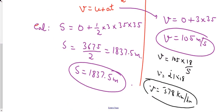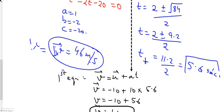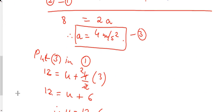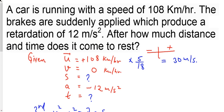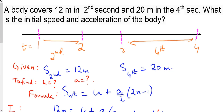Now let's do one question using the nth second formula. A body covers 12 metres in the second second and 20 metres in the fourth second. What is the initial speed and acceleration of the body? In physics, it is very important to make a diagram to help visualize. The second second means time interval from t=1 to t=2, so S_second = 12 m. The fourth second means interval from t=3 to t=4, so S_fourth = 20 m.